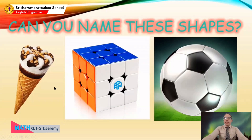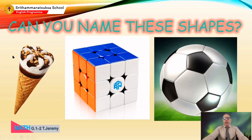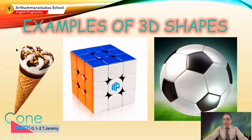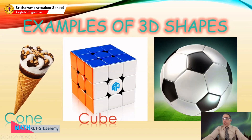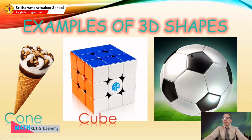Okay, let's see if you can name the 3D shapes that are in these pictures. This first one is an ice cream cone — good! The next one is a toy, it is called a Rubik's cube or a magic cube. And the third one — yes, it's a football, but the shape is a sphere.